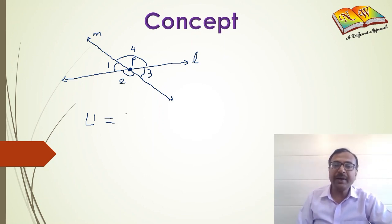But angle 1 and angle 3 lie on opposite sides of vertex P, and therefore they are called vertically opposite angles.